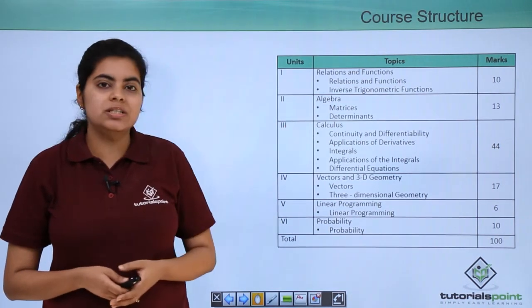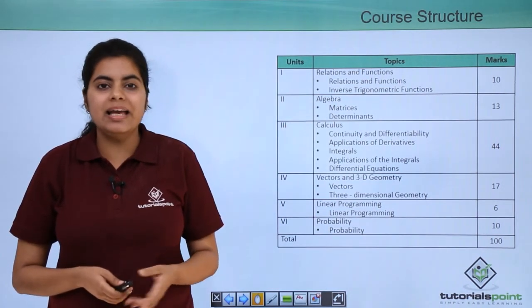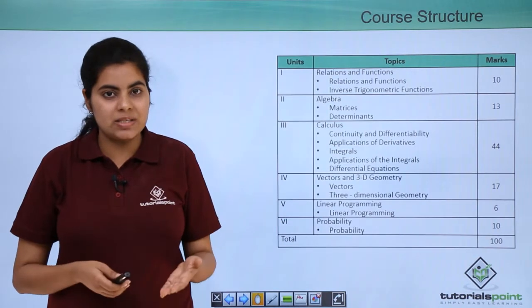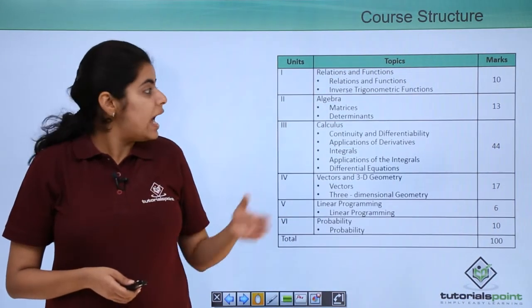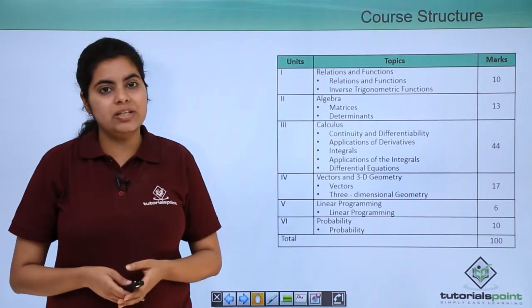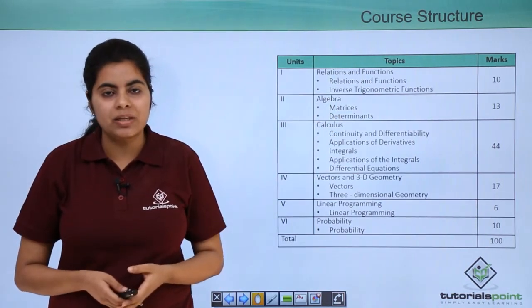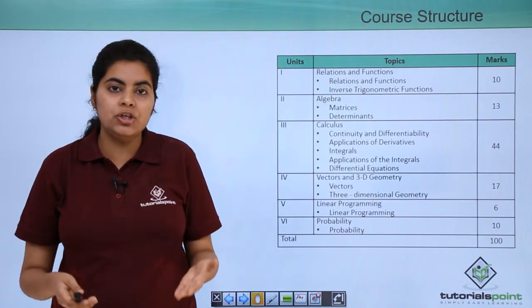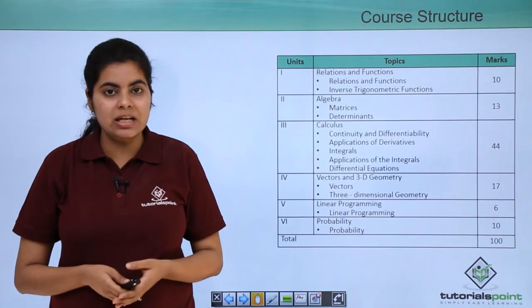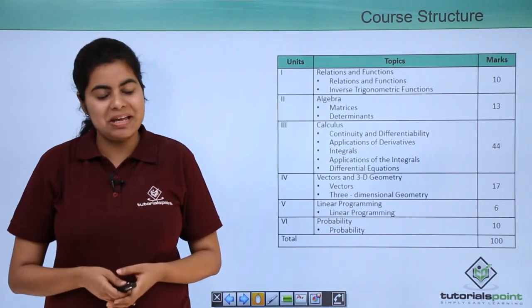About the second unit, algebra, there are again two chapters: matrices and determinants. This unit has an overall weightage of 13 marks. 13 marks is a huge number when considered for scoring good marks in mathematics.